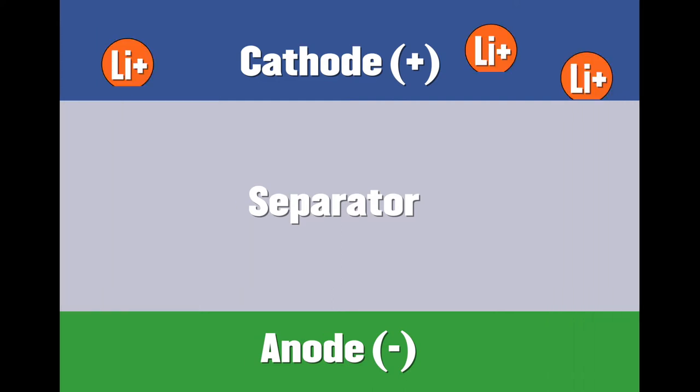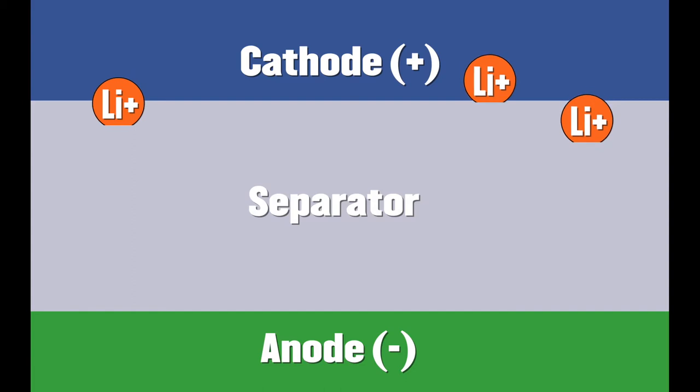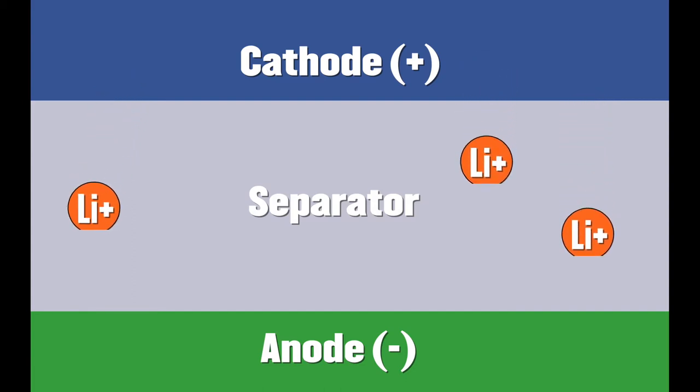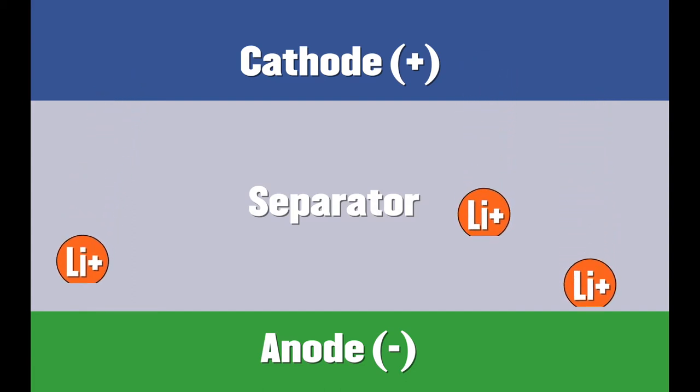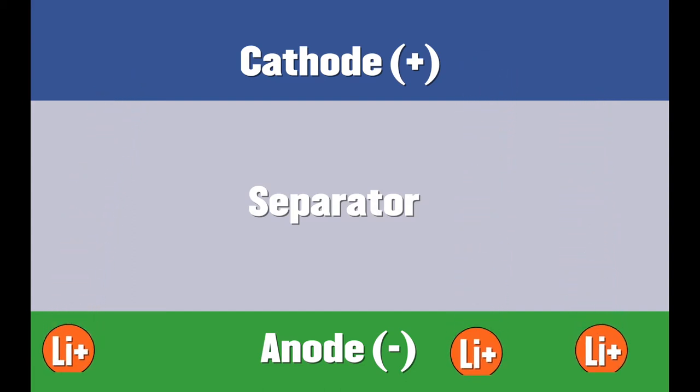When you charge them and discharge them, lithium comes from the cathode side, goes through the separator, and then gets inside the particles.